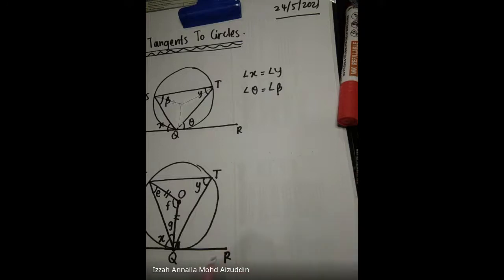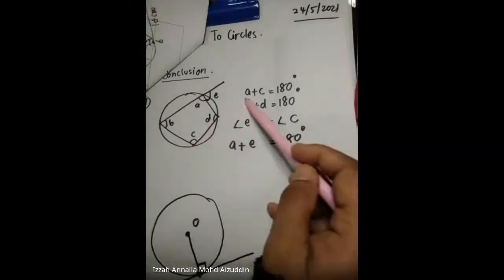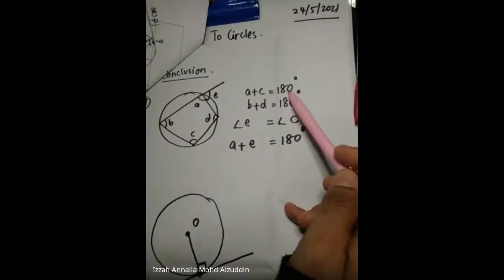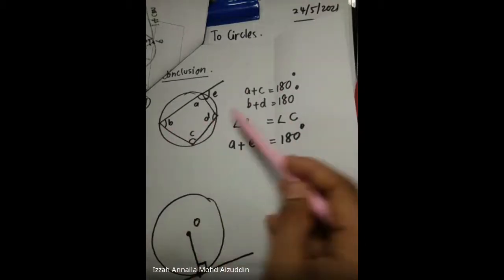Before we start today's class, this is the conclusion from what you learned before. Number 1: cyclic. Cyclic means a quadrilateral in a circle — every vertex of the quadrilateral must touch the circumference. So, A plus C, the opposite angle, equals 180. B plus D equals 180 — that is the opposite angle.